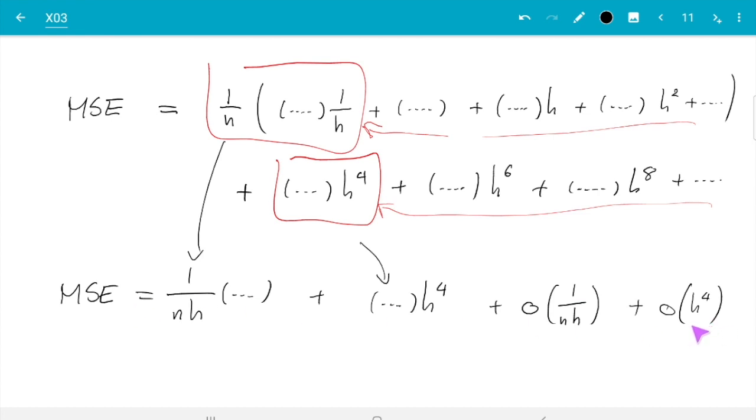Okay, so that tells us what the mean squared error is and what's left to do now is we look at this expression as a function of h, the bandwidth, and then we just find the h which minimizes the expression. So we find the optimal h, the one which minimizes the error. But we'll do that in the next video, so see you very soon.